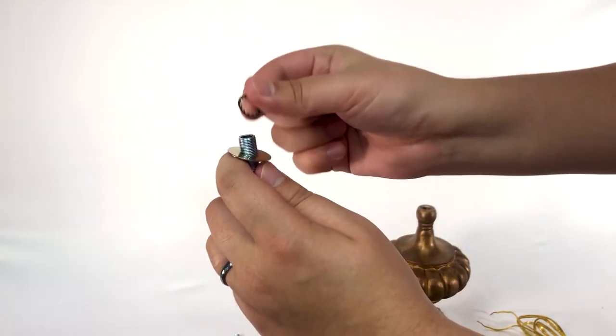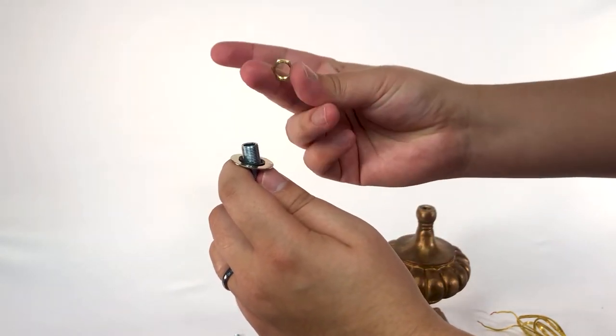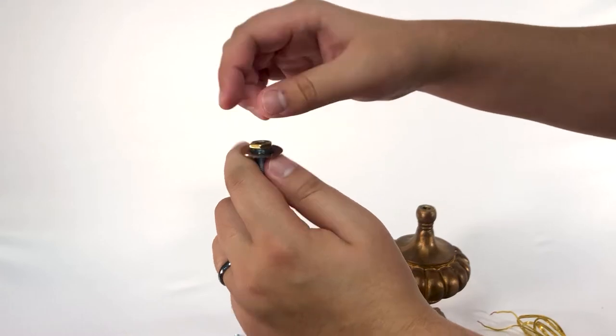Attach a washer, lock washer, and lock nut at the bottom of the pipe, then slide the pipe into the lamp base.